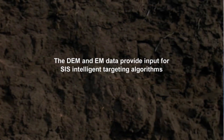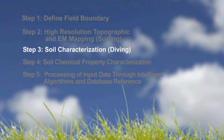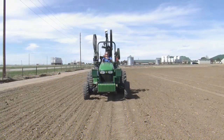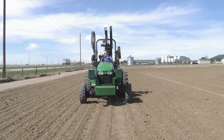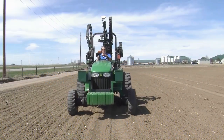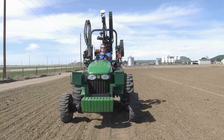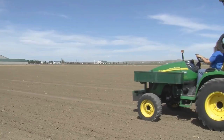This information is used for the next step in the process — Step 3 — in which we investigate what exactly it is that creates the soil variability. This process is called soil characterization, or diving. The diver can be mounted on a number of different platforms. In this case it's on a tractor, but it can also mount on a six-wheel gator or on a track vehicle.